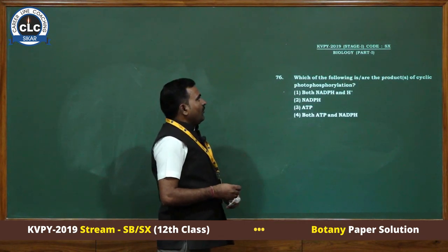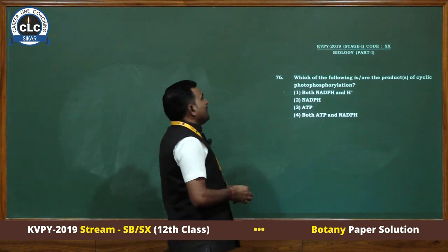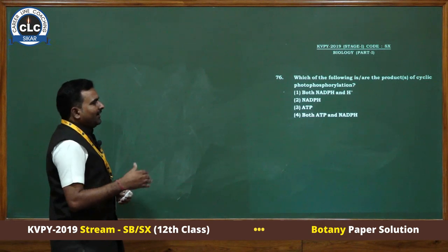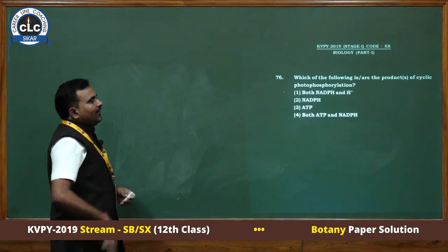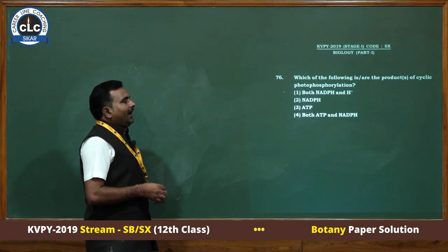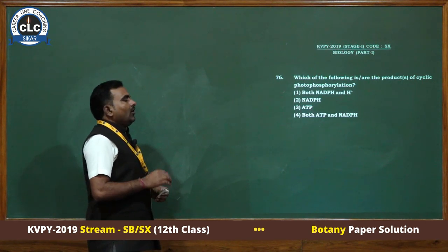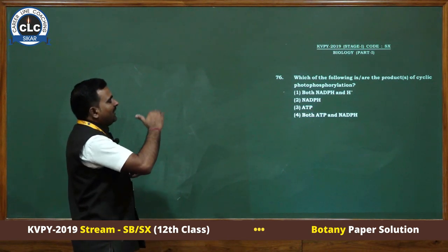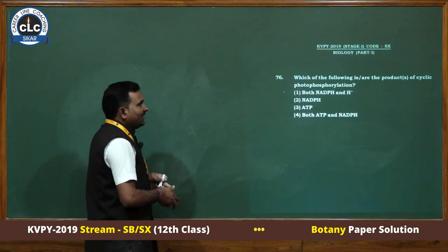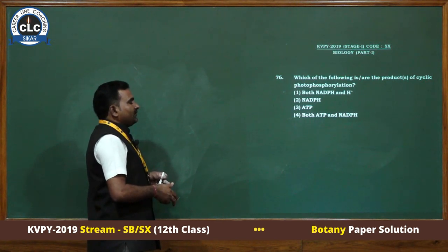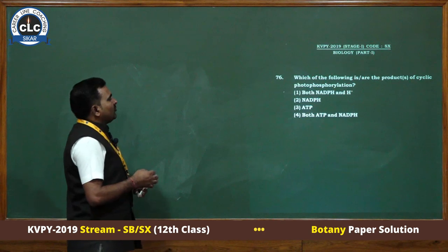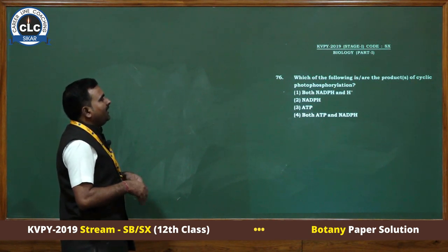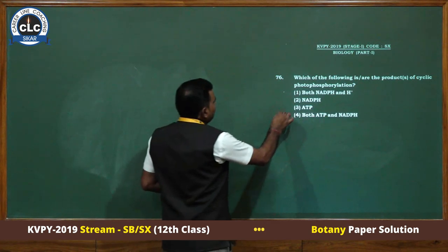Which of the following are the products of cyclic photophosphorylation? There are two types of photophosphorylation: cyclic and non-cyclic. Cyclic photophosphorylation occurs in the stroma where PS2 and NADPH2 are not involved. The electron emitted from the reaction center of PS1 returns to the reaction center. Water is not split and NADPH2 is not formed. During cyclic photophosphorylation, only ATP is produced. The answer is third.